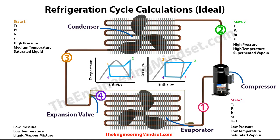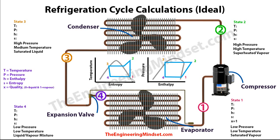Just to clarify the acronyms: T is temperature, P is pressure, H is enthalpy, S is entropy, and X is the quality of the refrigerant. Quality is zero if it's fully liquid and one if it's fully vapor — it tells you how far between liquid and vapor the refrigerant is when it's inside the dome. For example, x equals one means it is a saturated vapor right on the saturation line.